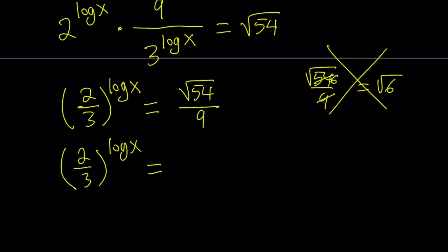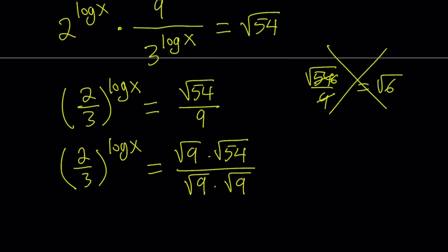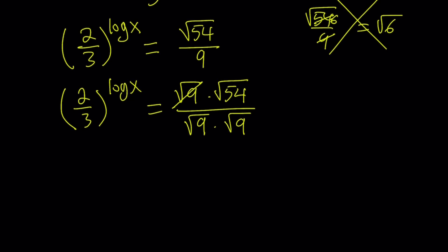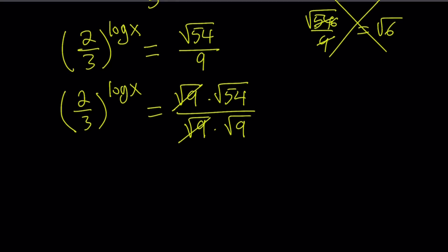So I can go ahead and take the square root of 54. And notice that there is a 9 at the bottom. So I can write the square root of 54 as square root of 9 times square root of 54. And the 9 can also be written as square root of 9 times square root of 9. Now we can cancel out square root of 9 here. And our expression is going to be a little simpler. Oops, I was supposed to write 6 here, not 54. So now we got square root of 6 divided by square root of 9. And definitely we can write this as the square root of 6 over 9, which can be simplified to square root of 2 thirds.